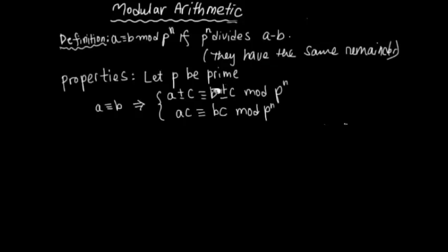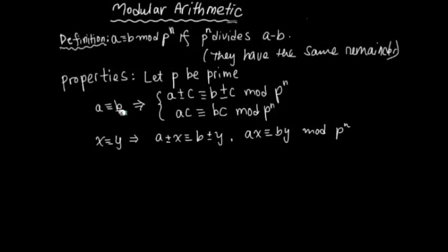As I said, it behaves a lot like an equal symbol, so if a is congruent to b, you can add the same integer to both sides or multiply the same integer to both sides and the congruence relation — the remainder — stays the same. If you have two congruence relations, you can add them side by side or multiply them side by side and the congruence relation remains the same.